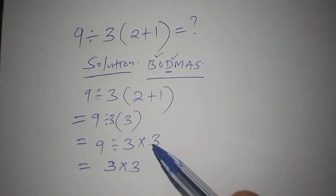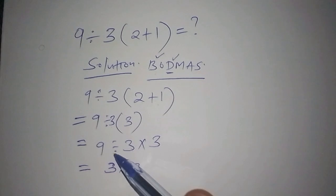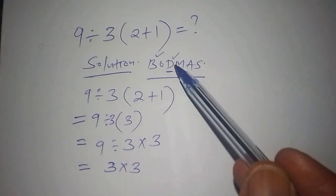You should not rush multiplying 3 times 3 before you work out 9 divided by 3, because division comes before multiplication.